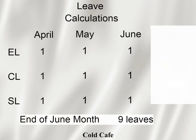The same goes for June, July, and so on. Till July month, if I didn't take any leave, that's four months — April, May, June, July. At the end of July, I am having four leaves in each category: earned leave four, casual leave four, and sick leave four. This is how my leaves are carried forward.